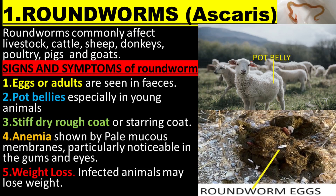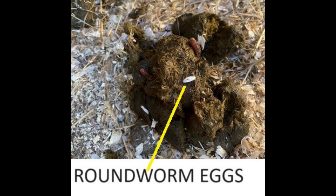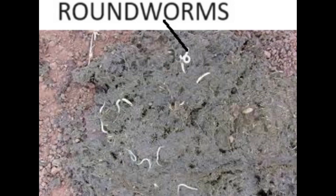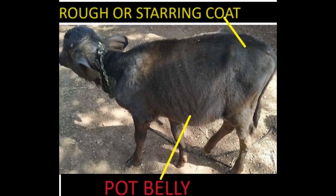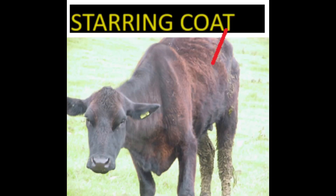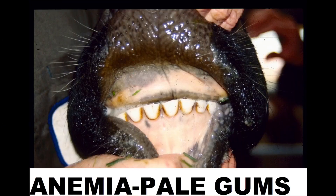Signs and symptoms of round worm attack: eggs or adults are seen in feces. Potbellies, especially in young animals. Stiff, dry, rough coat or staring coat. Anemia shown by pale mucus membranes, particularly noticeable in the gums and eyes.